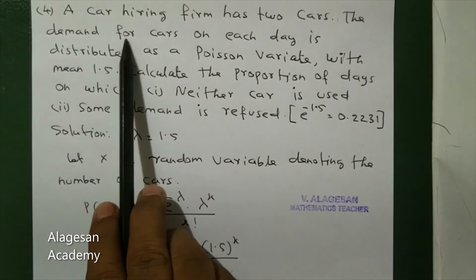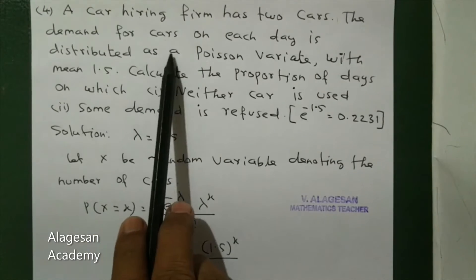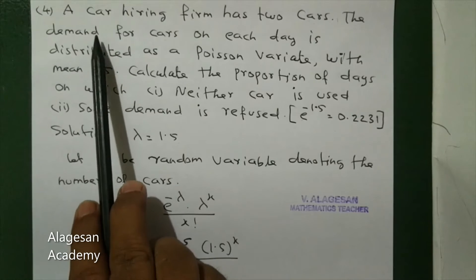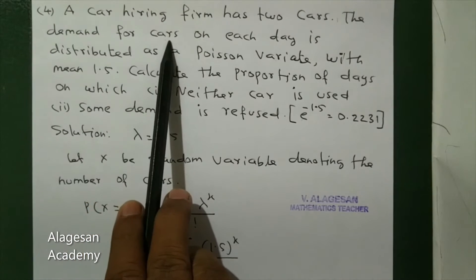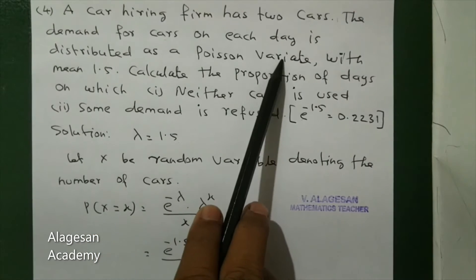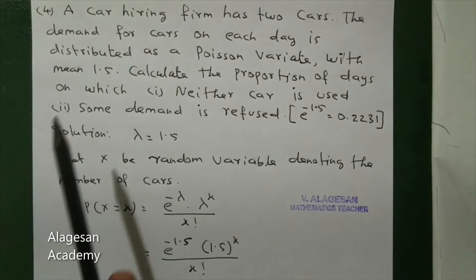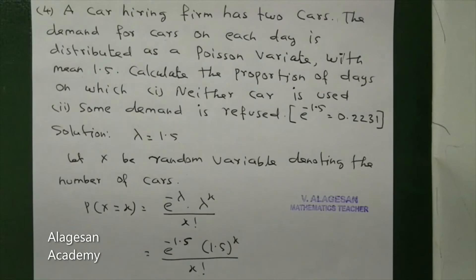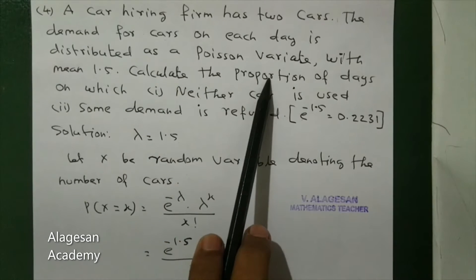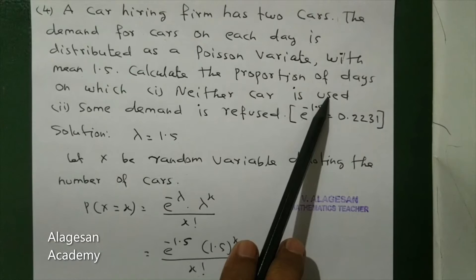The demand for cars on each day is distributed as a Poisson variate with mean 1.5. Mean means lambda, so lambda is directly given as 1.5. Calculate the proportion of days on which neither car is used.